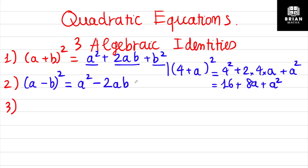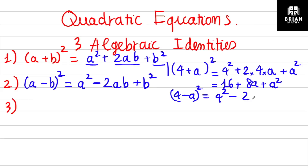The second identity is similar to the first, but the key difference is that you only have one minus sign — for the middle term — and the last term always equals plus b squared. For example, (4 minus a) squared equals 4 squared minus 2 times 4 times a plus a squared. Simplified, you get 16 minus 8a plus a squared.